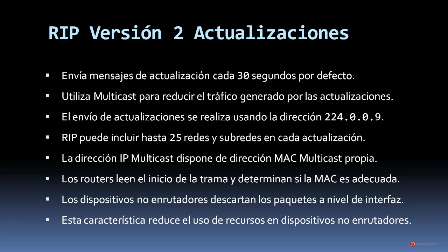Una parte importante de RIPv2 es el envío de actualizaciones. Envía mensajes cada 30 segundos por defecto, utiliza multicast a la dirección 224.0.0.9 para reducir el tráfico. Puede incluir hasta 25 redes y subredes en cada actualización. La dirección IP multicast dispone de dirección MAC multicast propia; los routers leen el inicio de la trama para determinar si la MAC es adecuada, y los dispositivos no enrutadores descartan los paquetes a nivel de interfaz, reduciendo el uso de recursos.